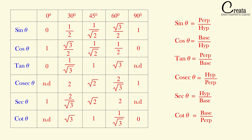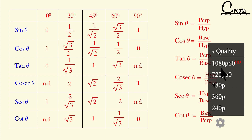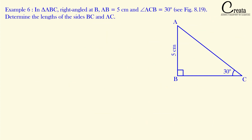Also observe that in these questions the trigonometric ratio formulas will be used, which we have already covered in the previous lecture. If you have not done that, go to the description — you will find the link to the previous lectures. So without taking any further time, let's take example number 6. In triangle ABC, right angle at B, AB is equal to 5 centimeters and angle ACB is equal to 30 degrees. Determine the length of the sides BC and AC.